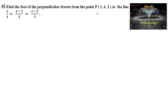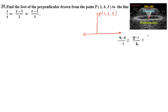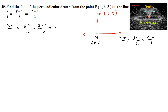So, from the point P, we need to find the foot of the perpendicular upon the line x/1 = (y−1)/2 = (z−2)/3. Let us consider M to be the foot of the perpendicular. We can consider any point on the line by setting x/1 = (y−1)/2 = (z−2)/3 = λ.